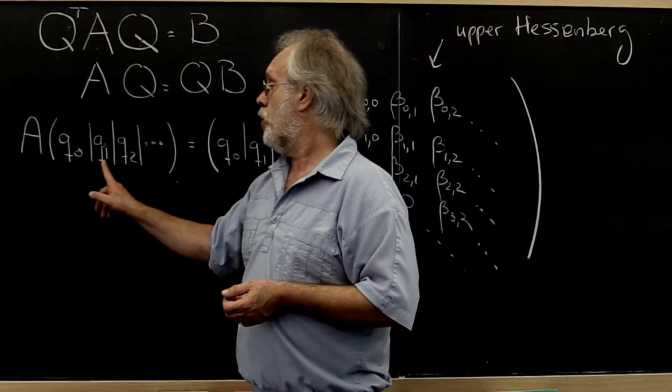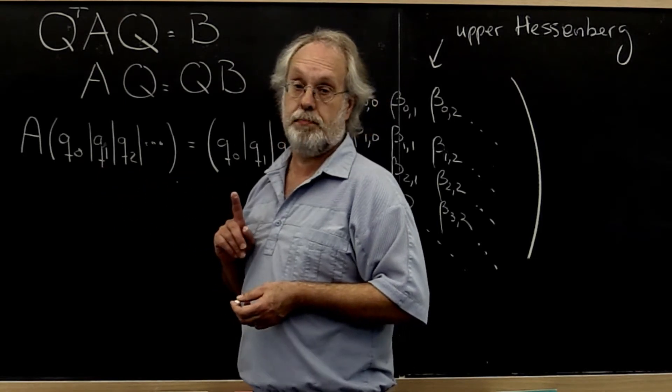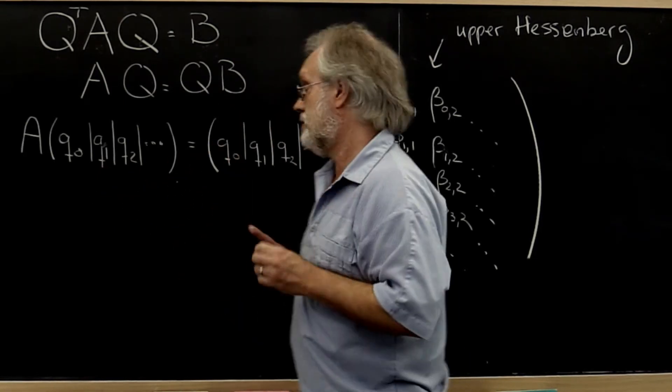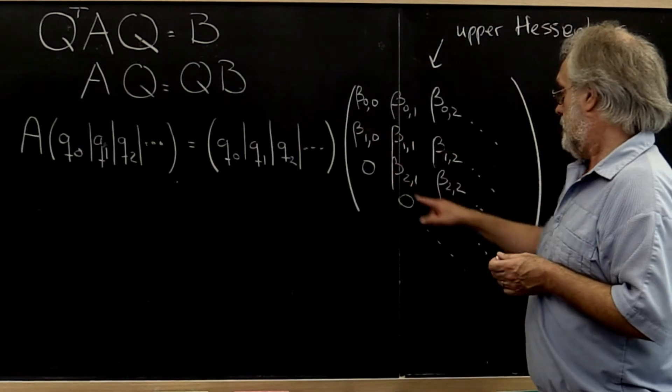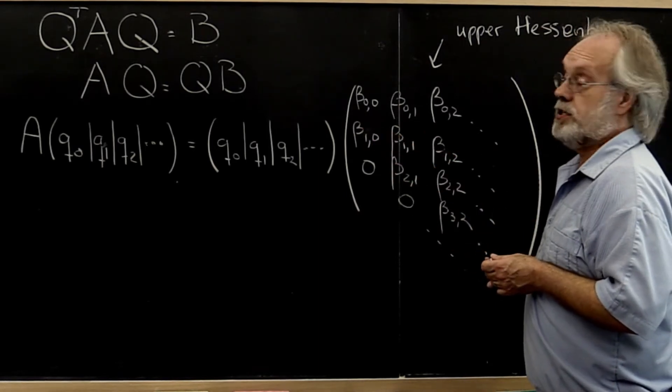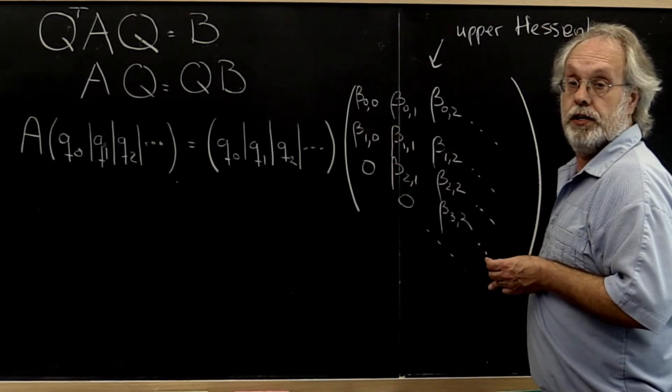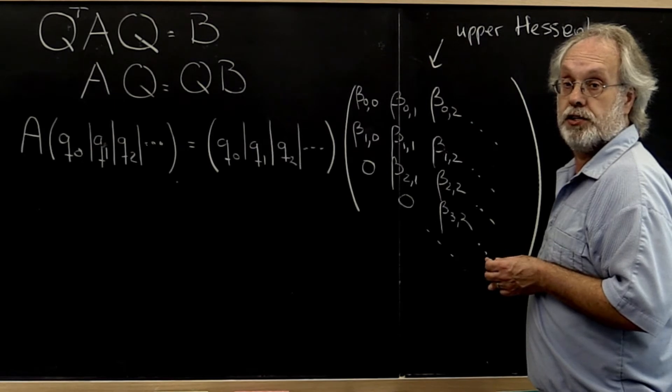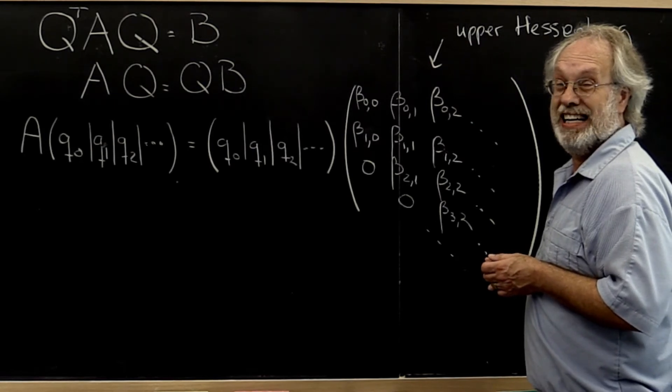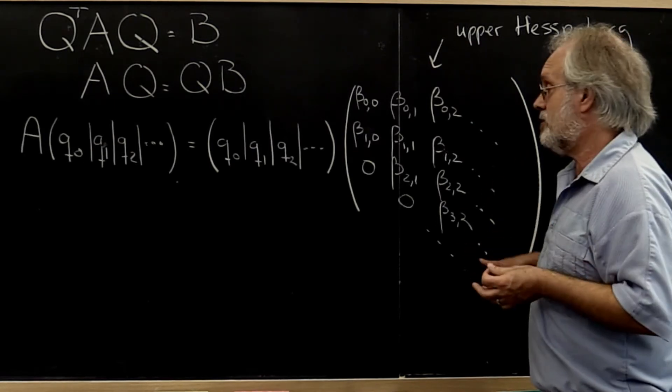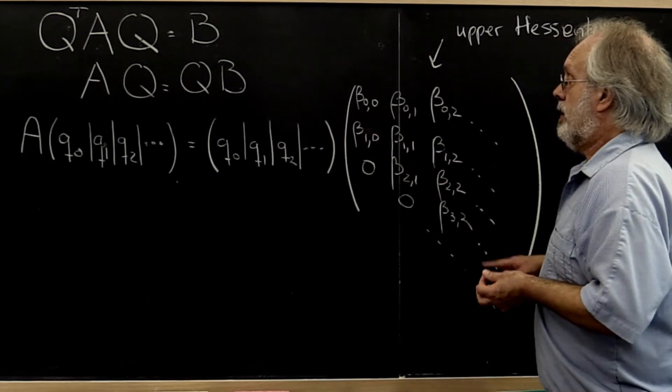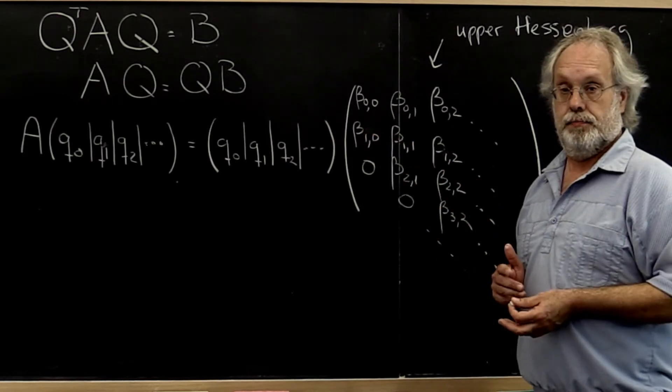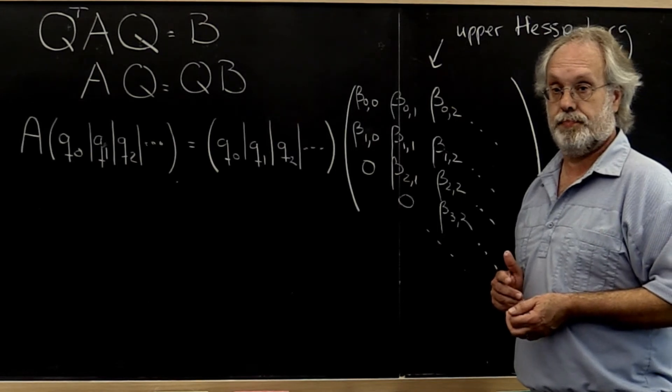Once you know that first column, all of these other columns are prescribed provided the sub diagonal elements of the upper Hessenberg matrix are nonzero. And actually to get to uniqueness we need to sort of arbitrarily say that they're all positive values.